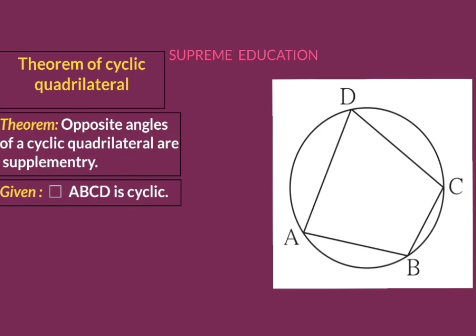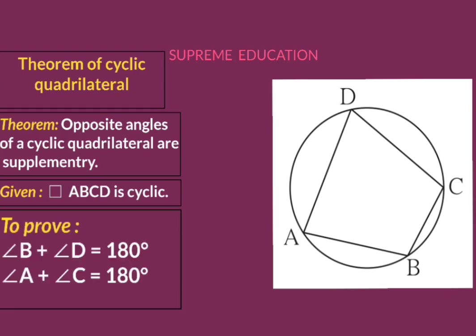What is to prove? We have to prove that opposite angles of a cyclic quadrilateral are supplementary. Looking at the diagram, the angle opposite to angle A is angle C, so we must prove angle A plus angle C equals 180 degrees. The remaining pair is angle B and angle D, so we also prove angle B plus angle D equals 180 degrees.